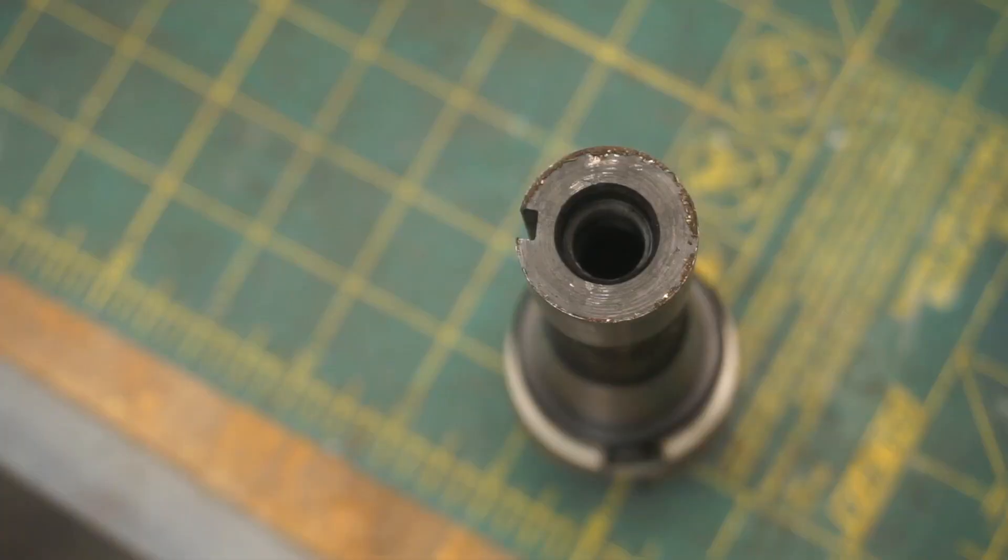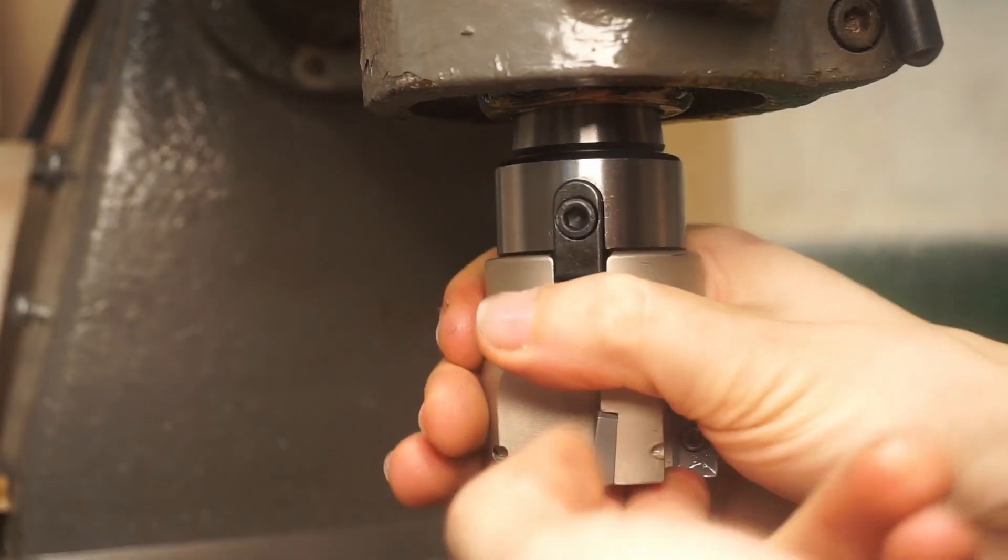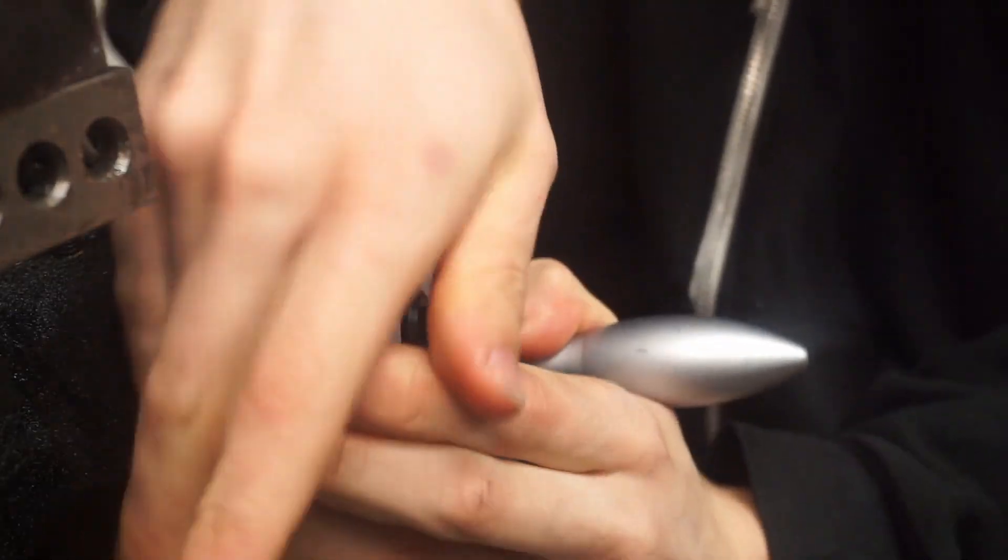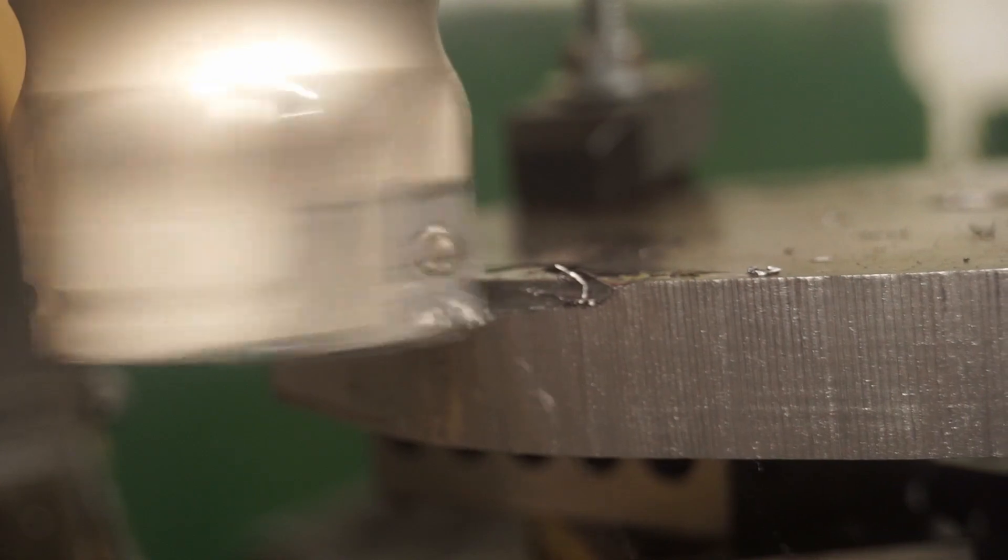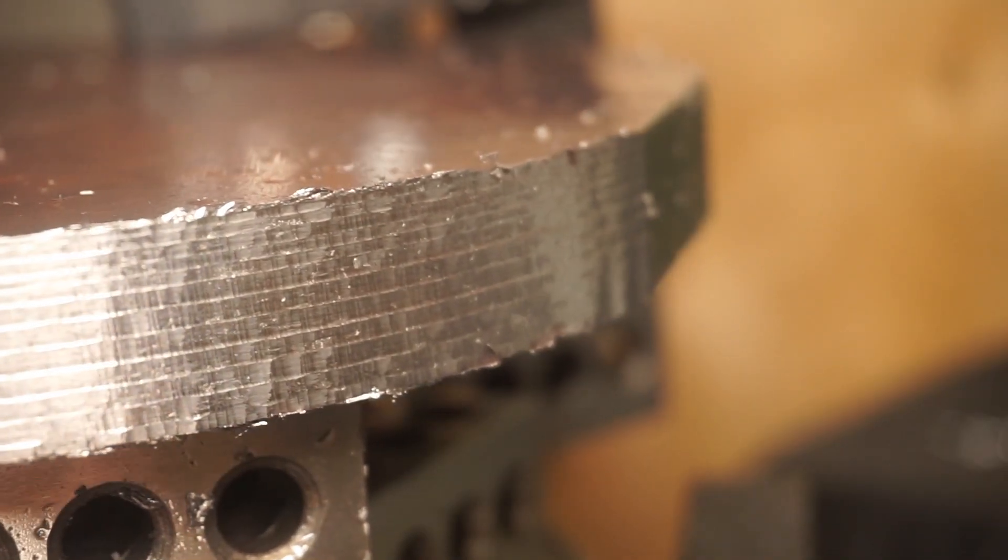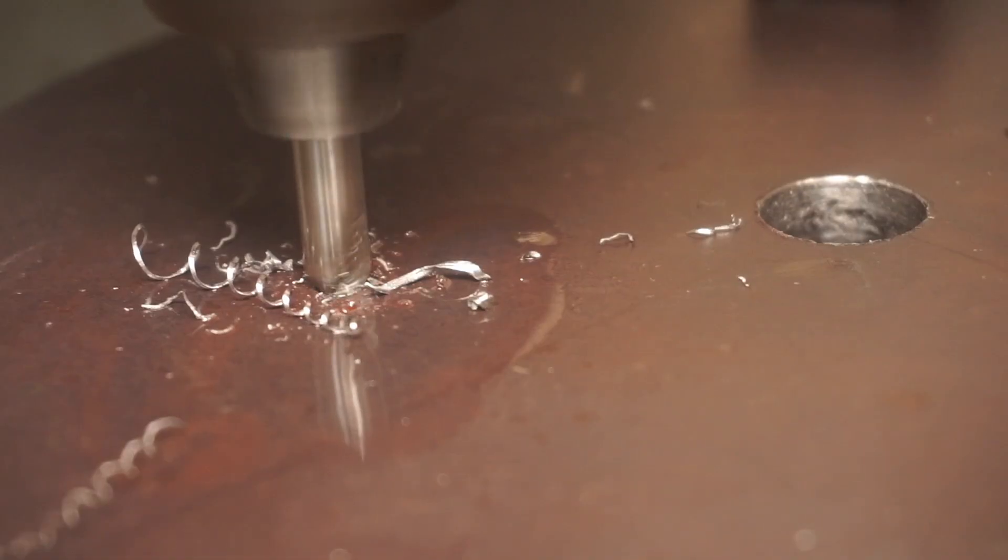I need to now round the outside of the circle blank, and to do that, I'm going to use this shell mill. Now I'll drill a hole so I can attach this piece to the side linkage.